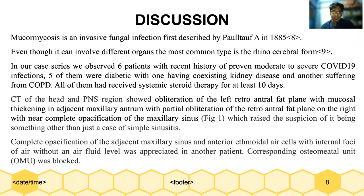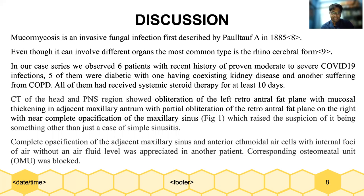Mucormycosis is an invasive fungal infection first discovered by Politoff in 1885. Although it can involve different organs, the most common type is the rhinocerebral form. In our case series, we observed six patients with recent history of proven moderate to severe COVID-19 infection. Five were diabetic, with one having co-existent CKD and another suffering from COPD. All had received systemic steroid therapy for at least 10 days.